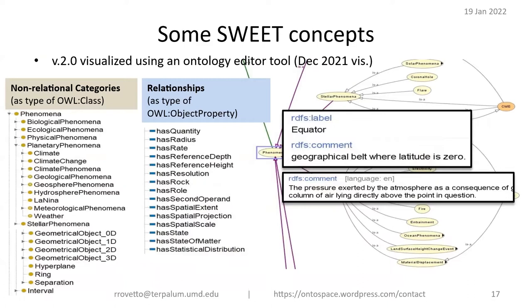I accessed SWEET version 2.0 using the ontology editor Protégé in order to show what SWEET looks like in a particular type of editor. On the left side we have non-relational categories, or Web Ontology Language classes. In the middle we have relationships in which SWEET represents its Earth science data. On the right side we see standard metadata annotations like the RDFS label or comment annotations, which allow the developer or contributor to provide a human-readable display label such as 'Equator,' as well as any relevant content in a comment annotation.